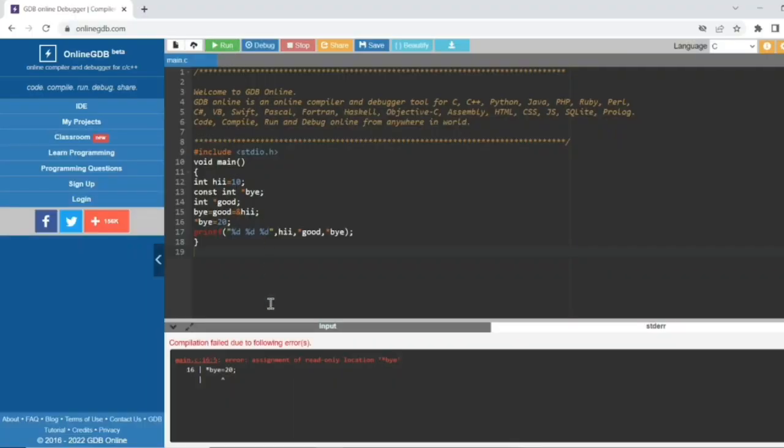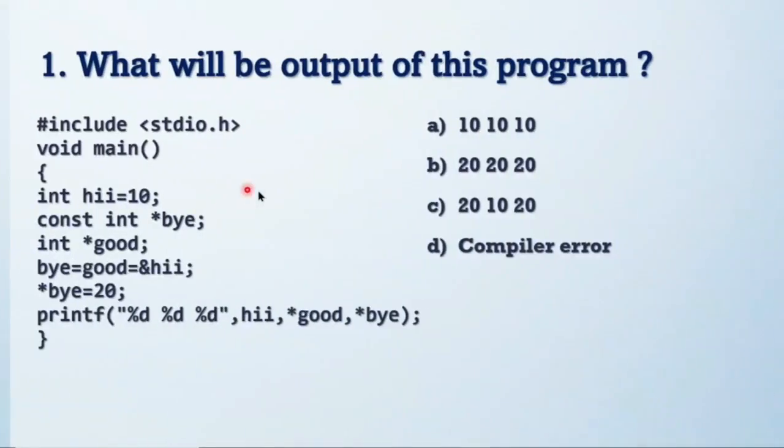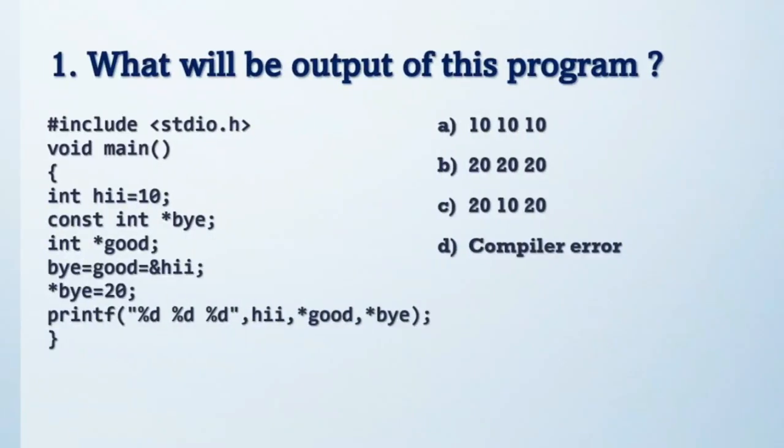Let's see what is the output. The output is generate error line number 16. So how? Line 16, see here. This hi, okay, this hi content is 10.